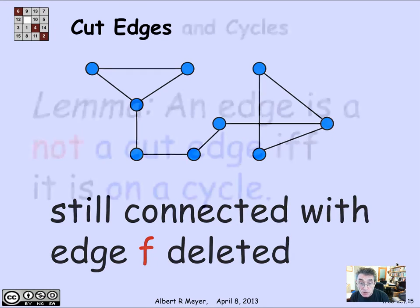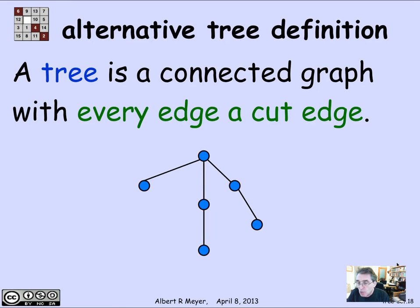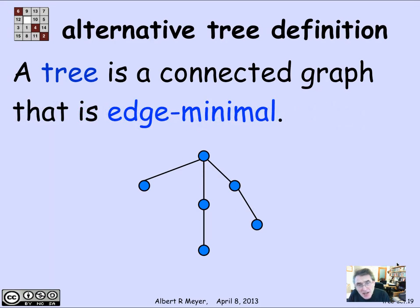An edge is not a cut edge if and only if it's on a cycle. If you cut an edge out of a cycle, everything on the cycle is still connected by going the other way around. So another way to define a tree is: a connected graph where every edge is a cut edge — as soon as you cut any edge, it stops being connected. A tree is a simple graph that is connected and edge minimal, meaning removing any edge breaks connectivity.